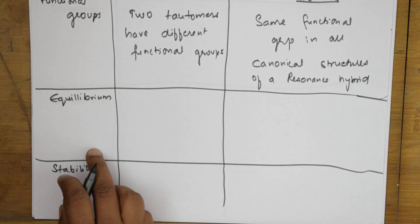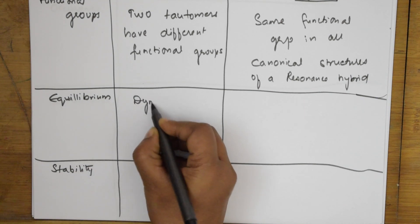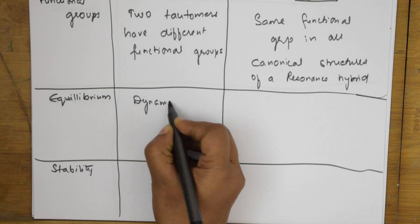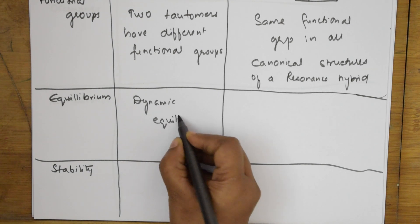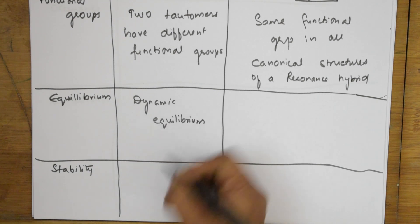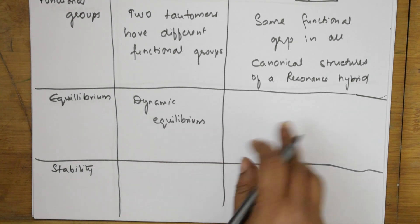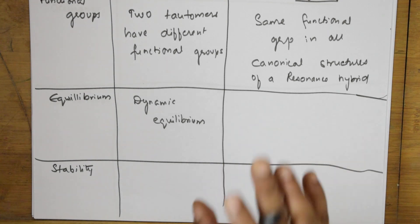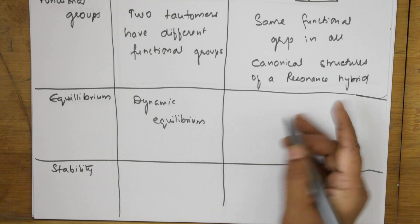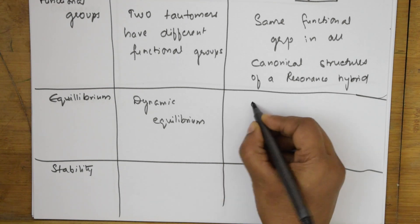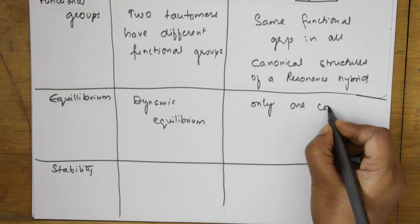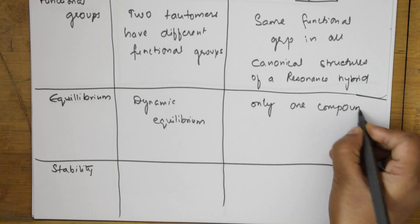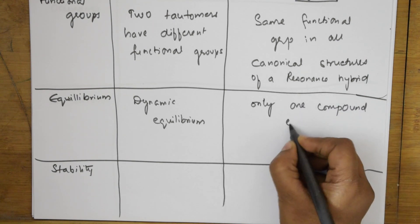The fourth criteria is equilibrium. In tautomerism, there is a dynamic equilibrium which exists — as discussed in the earlier video, it shifts between forms with varying percentages. But in resonance, only one compound exists, which is the resonance hybrid.